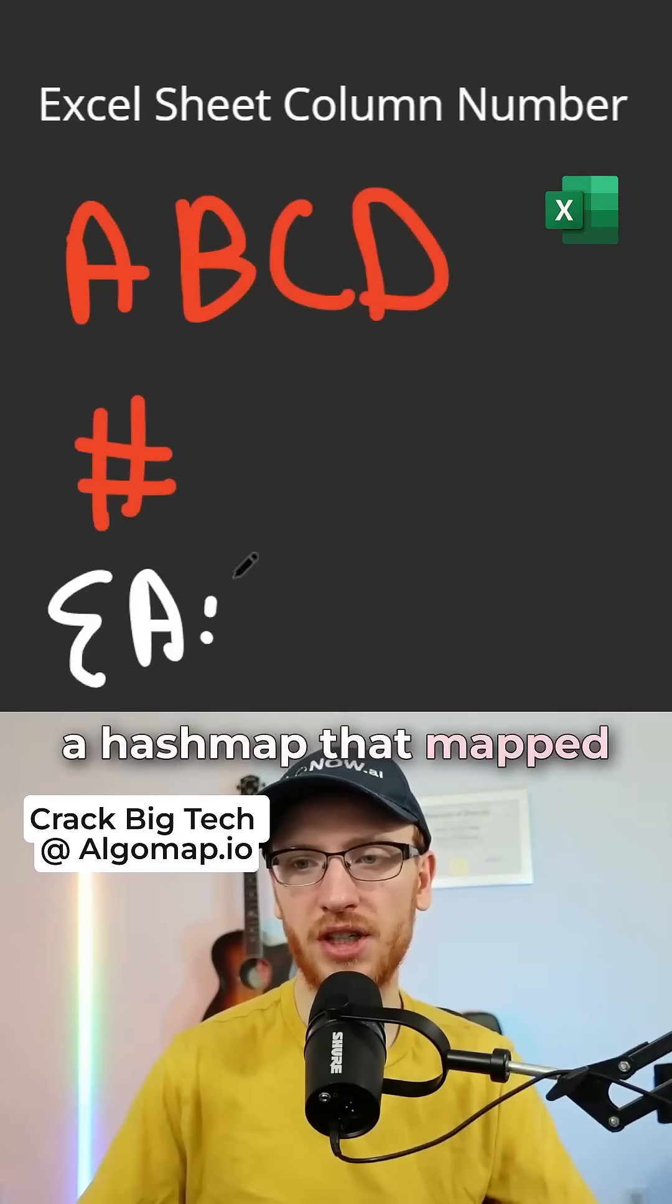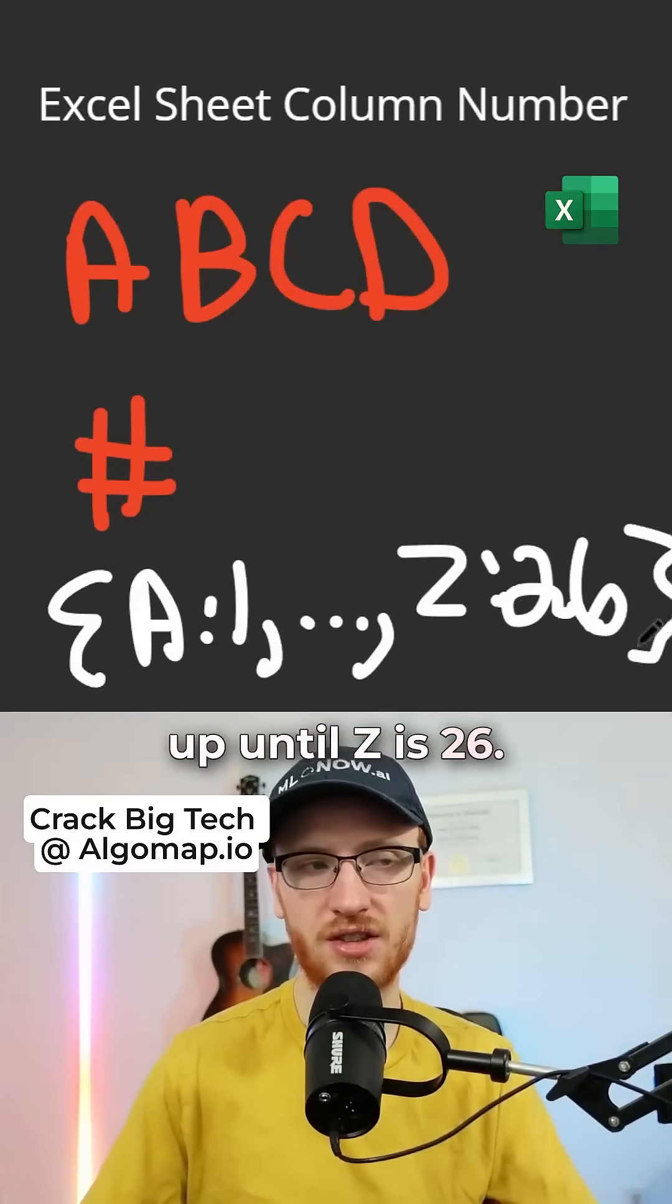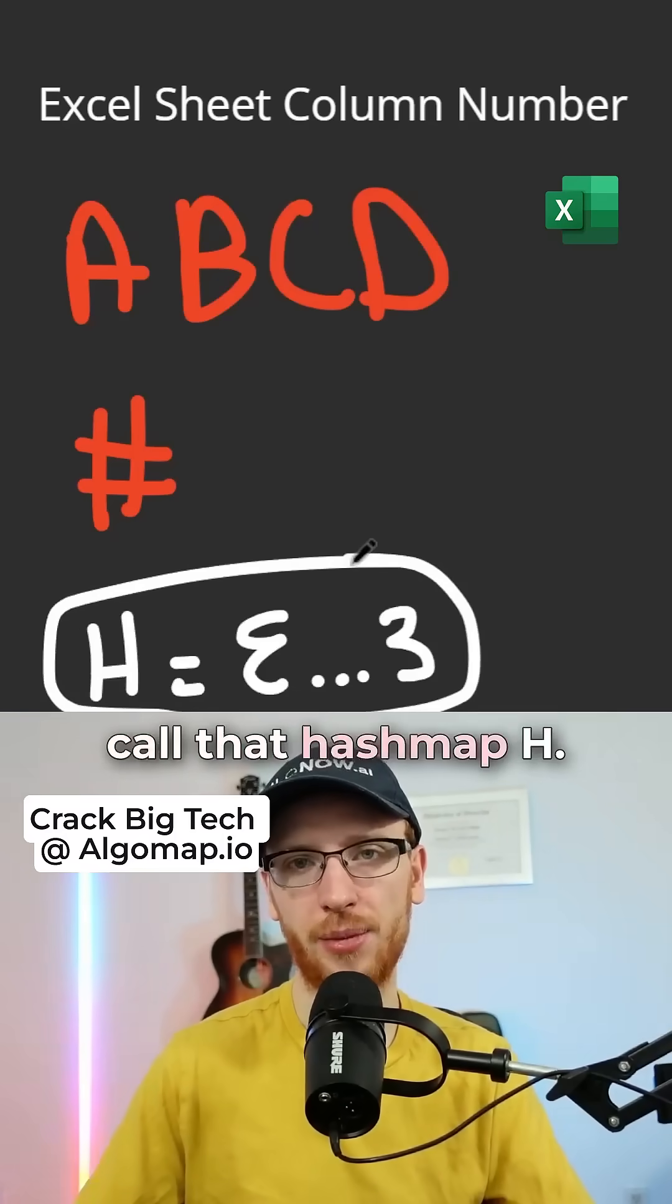We'd start with a hash map that mapped each letter to its corresponding value, all the way up until Z is 26. And for short, I'll just call that hash map H.